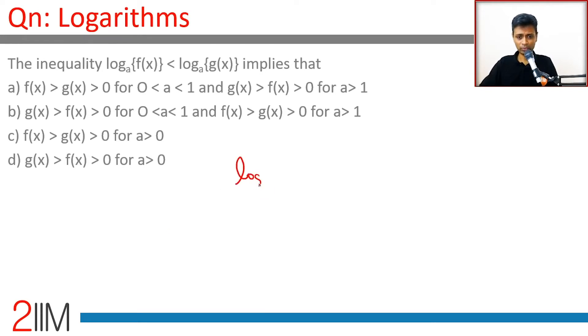Suppose you do log p to the base 10 is greater than log q to the base 10. 10 power something is p, 10 power something else is q. This tells us p is greater than q. Log of 100 to the base 10 is greater than log 10 to the base 10. 10 squared is 100, 10 power 1 is 10. 2 is greater than 1, so 100 is greater than 10. Wonderful!